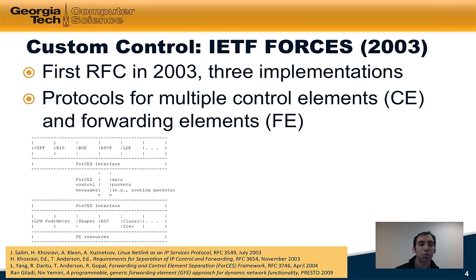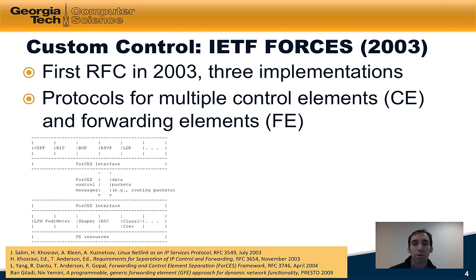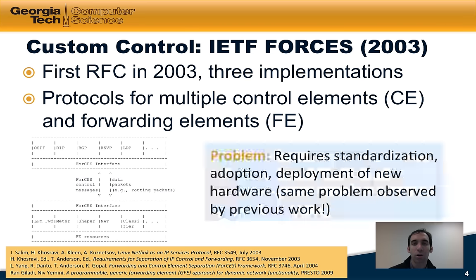The idea was that these switches or forwarding elements could be controlled over a standard control channel called the Forces interface. There might be multiple such controllers controlling the forwarding behavior of these forwarding elements. In some ways it looks a lot like the OpenFlow standard that we know today. The problem with this particular approach was that it required standardization, adoption by vendors, and deployment of new hardware — the same hurdles that motivated earlier work such as the active networks projects.